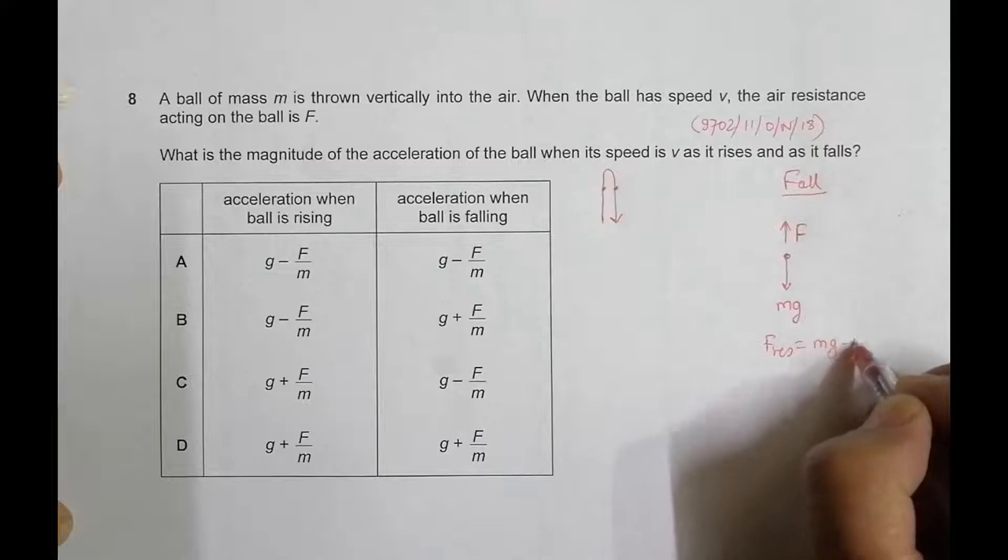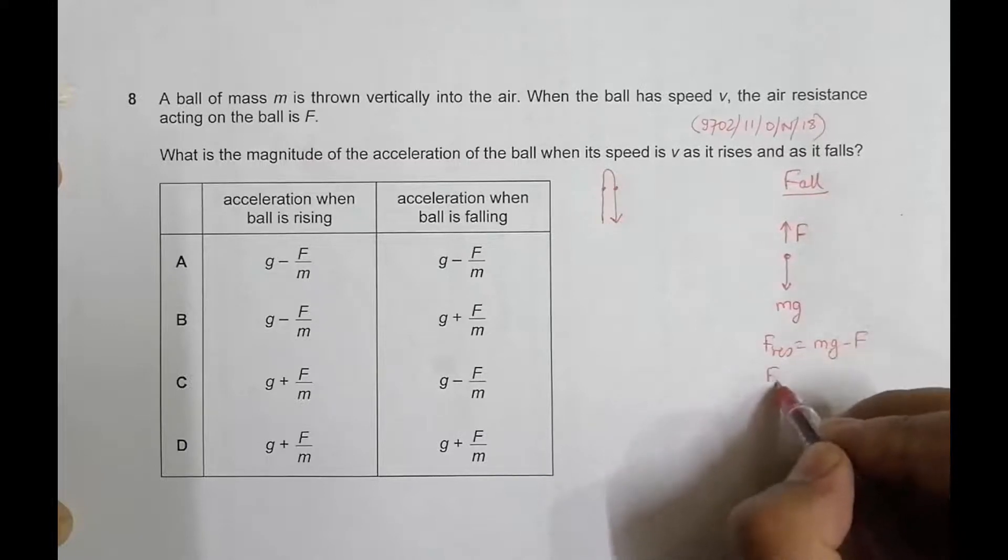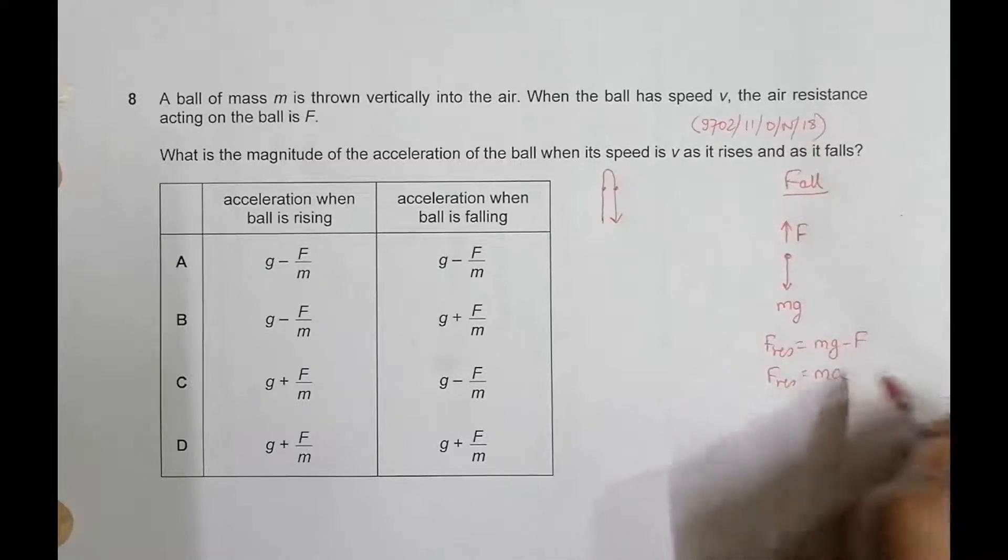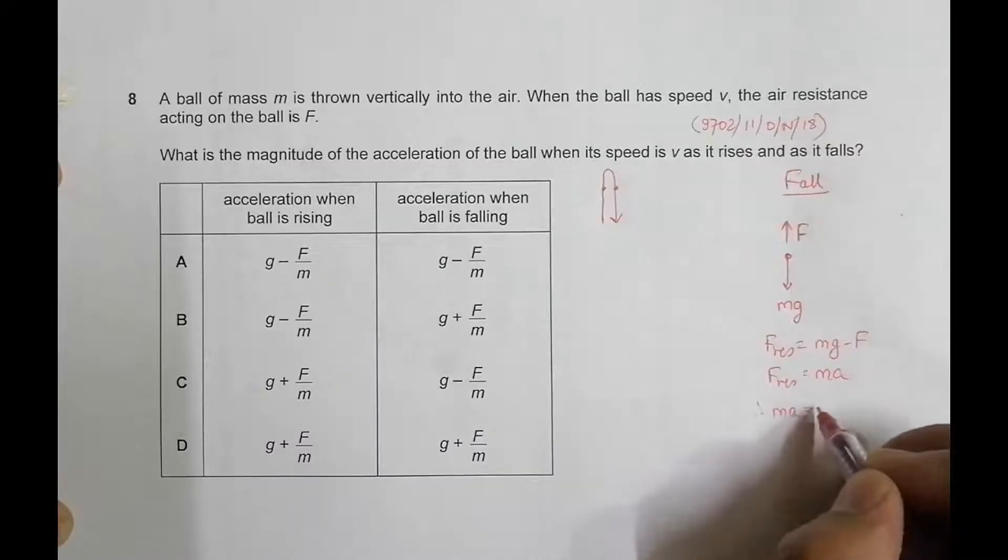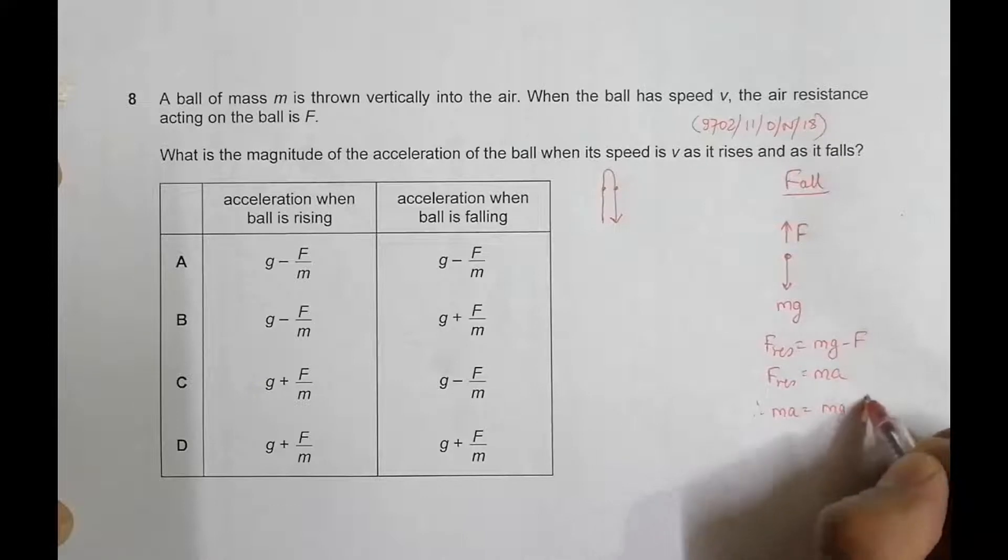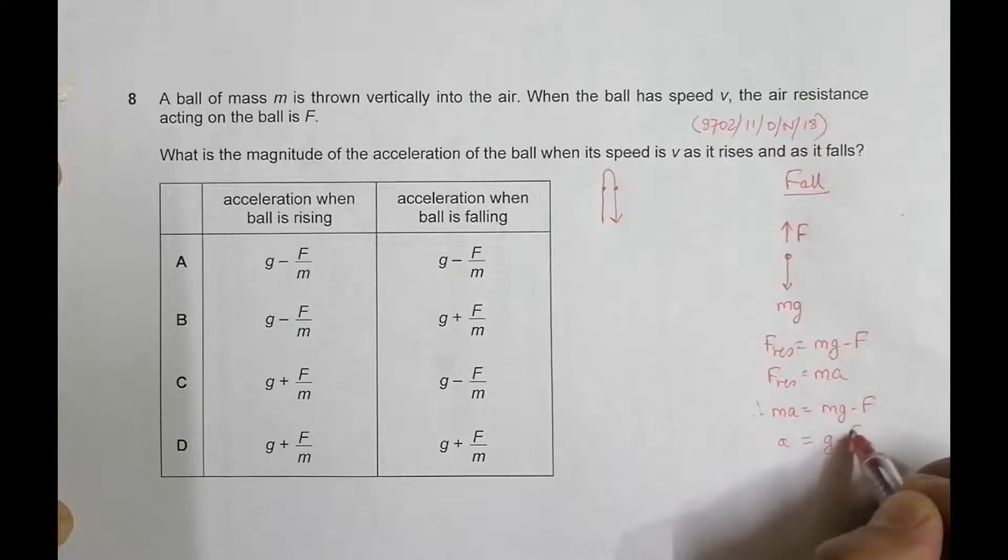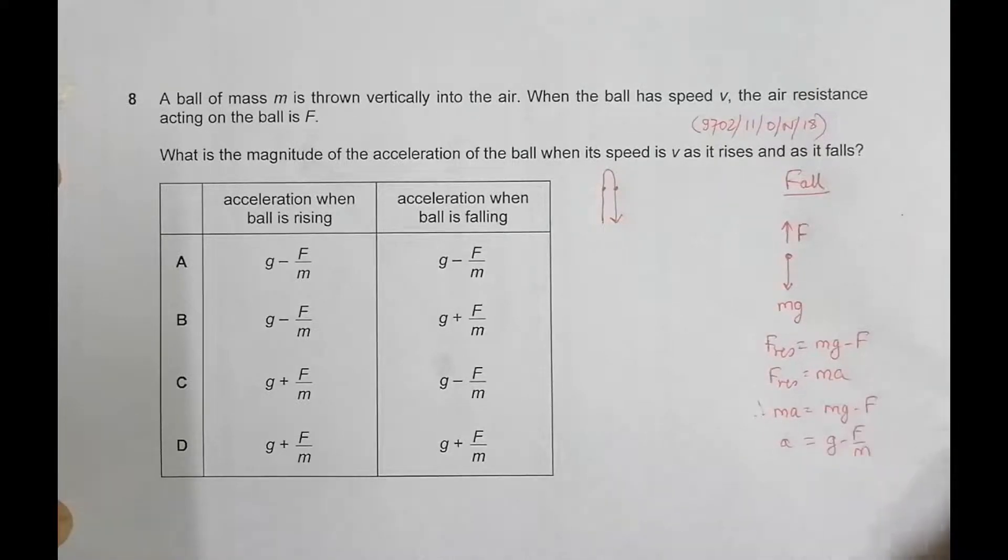So the force resultant is equal to Mg minus F and the same force resultant is equal to mass into a which will be in downward direction. So therefore we must have Ma should be equal to Mg minus F and a should be equal to, when I divide this thing by M, it becomes g minus F by M.